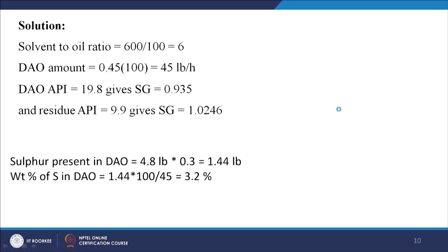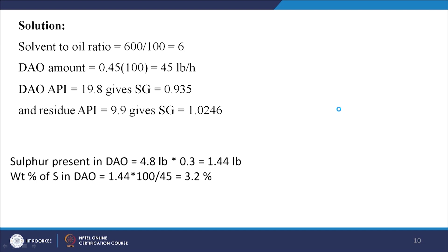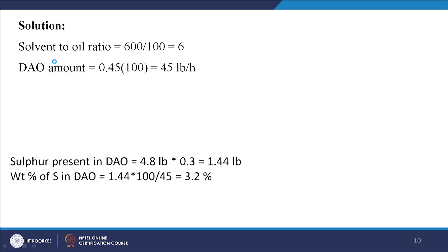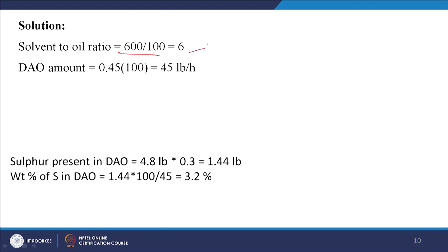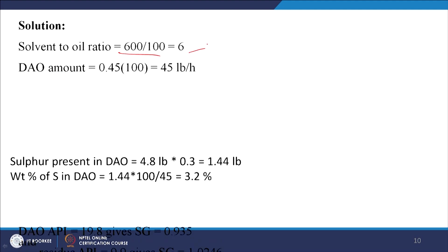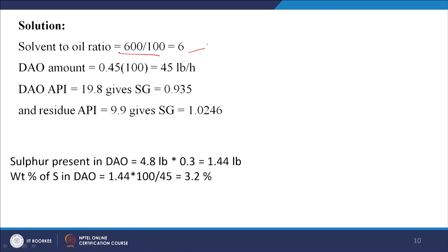At 220°F, DAO weight percent = 45% of the residue. It is assumed that sulfur in DAO is related to DAO yield — approximately 30% of sulfur transfers to DAO when DAO yield is around 50 volume percent. The solvent-to-oil ratio = 600/100 = 6. DAO produced = 0.45 × 100 = 45 pound per hour.